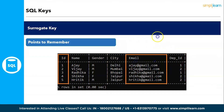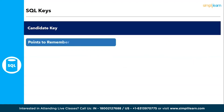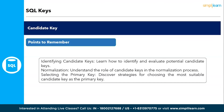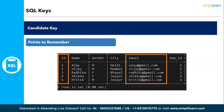The next important key is the candidate key. Candidate keys are columns or a combination of columns that could potentially serve as the primary key. Points to remember: identifying and evaluating potential candidate keys, understanding the role of candidate keys in the normalization process, and strategies for selecting the most suitable candidate key as the primary key. In an example with columns ID, name, gender, city, and email, both ID and email can act as candidates since they contain unique and non-null values.